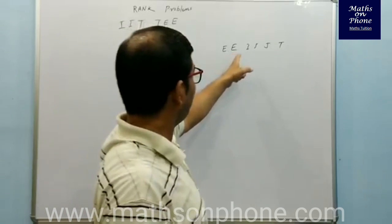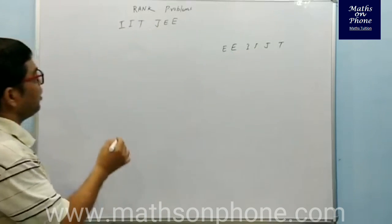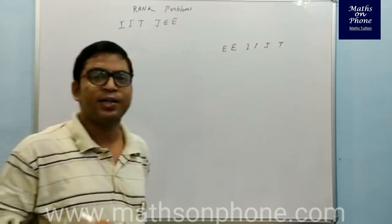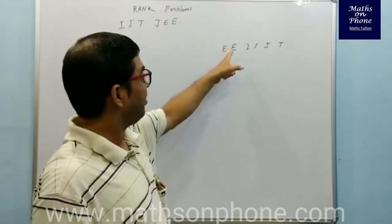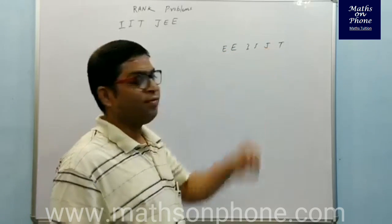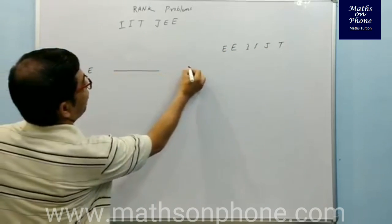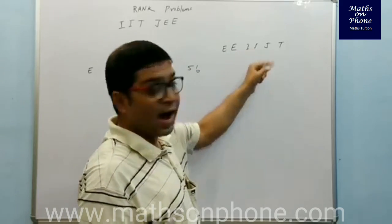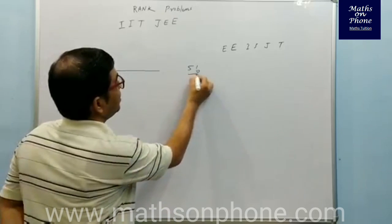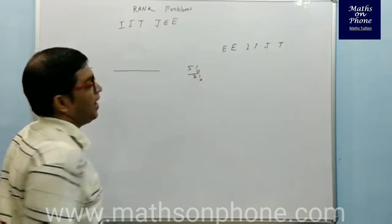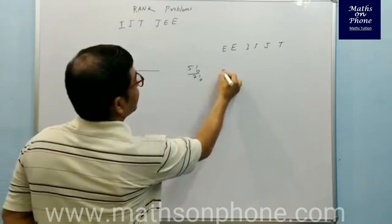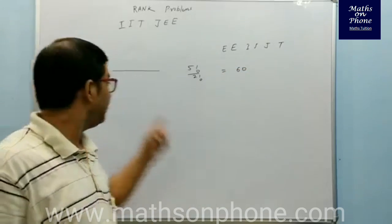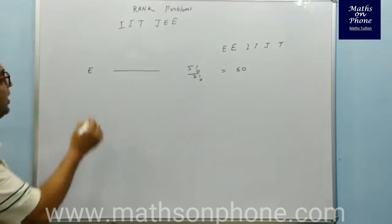There are 6 letters total. If I start with the first letter E fixed, the remaining 5 letters can be arranged in 5! ways. But out of the remaining 5 letters, there are 2 I's — repetition of 2 I's — so we divide by 2!. This gives 5!/2! = 60. So the number of words starting with letter E is 60.